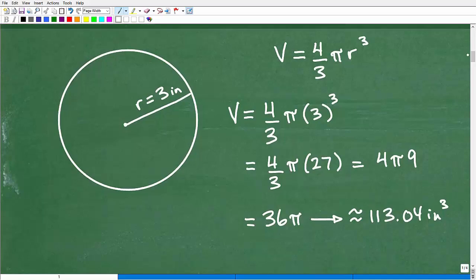All right, so here we go. This is our sphere, and you can see it has a radius of 3 inches, and we're trying to find the volume. And this is the formula we need to use. So the volume of a sphere is equal to 4 thirds times pi times the radius cubed. So you need to know the formula. If you don't know the formula, we won't be able to do the problem. So that's number one.